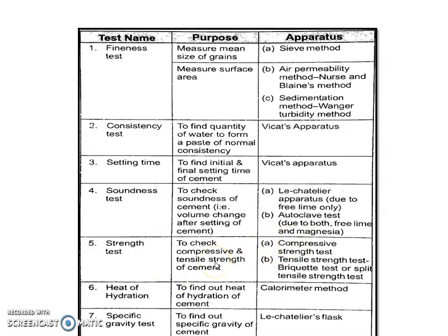The strength test includes both tensile and compressive strength. Compressive strength and tensile strength are important. Heat of hydration is tested using the heat of hydration method. For specific gravity test, the specific gravity of cement is 3.15.